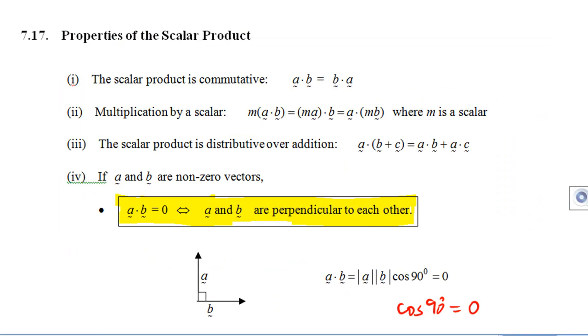Let's look at some properties of scalar product. First, the scalar product is commutative. That means a dot b and b dot a are equal.